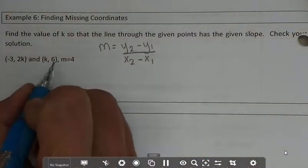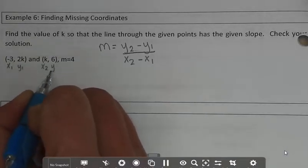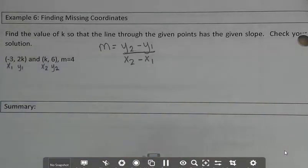So what I'm going to do is I'm going to take my two points, I'm going to label them x1, y1, x2, y2. And then this is my slope.